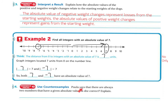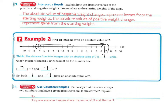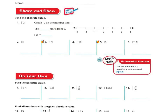Use counterexamples. Paula says that there are always two numbers that have a given absolute value. Is she correct? No — only one number has an absolute value of 0, and that's 0. Let's do a few more: find the absolute value of negative 2. If I graph it on the number line, here's my 0, and negative 2 is 2 spaces this way. The absolute value of negative 2 is 2 because it is 2 units away from 0.